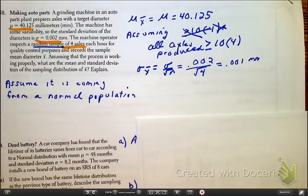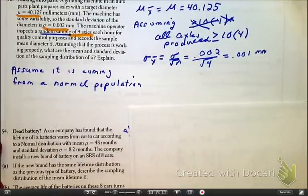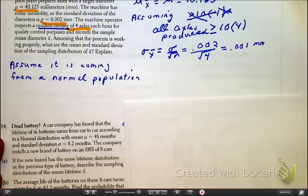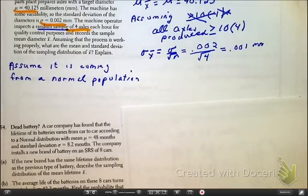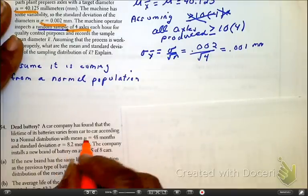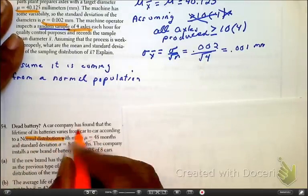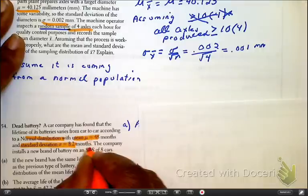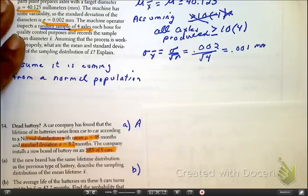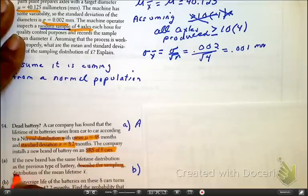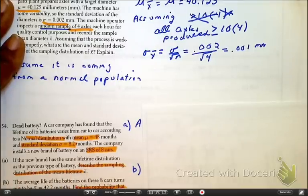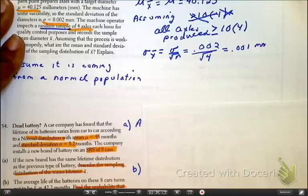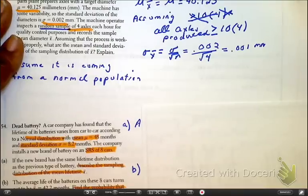Now I want to go to problem number 54. Please take a moment to read over that because now they're going to ask us to find the probability of something. So go ahead and pause. As we gather some information, they tell us, thank you, that is normally distributed. We have a mean of 48 and a standard deviation σ is 8.2. We have an SRS of 8 cars. At least they told us it's normally distributed so we can go with that.